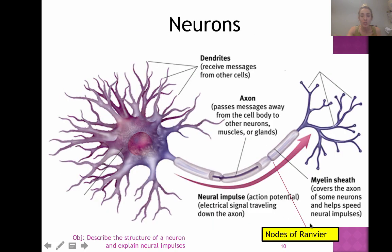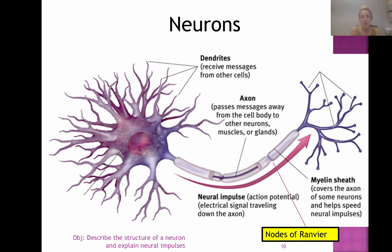I want to point out the nodes of Ranvier — we'll talk more about them when we discuss how neurons communicate. These are the small spaces between one section of myelin sheath and the next along the axon. That is where the electrical impulse gets recharged before moving on to the next section, kind of like little sausage-link gaps.